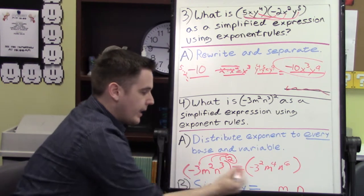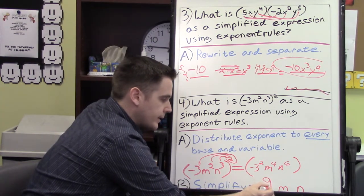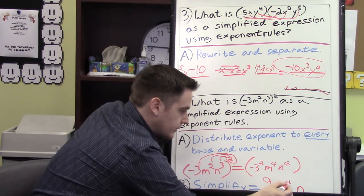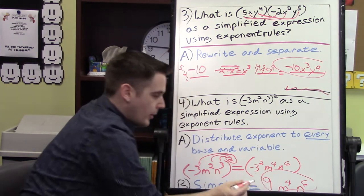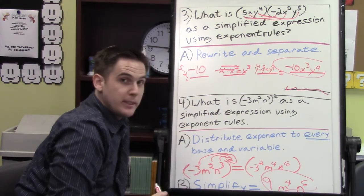And then simplify. So we can simplify negative 3 squared, that gives us a positive 9. And m to the 4th, can't simplify that. And we can't simplify n to the 6th. So 9 times m to the 4th times n to the 6th is your answer. Pretty simple.